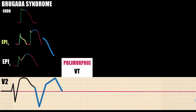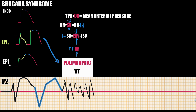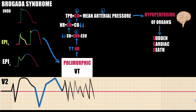Short-coupled premature complexes are capable of initiating circus movement re-entry, represented by polymorphic ventricular tachycardia. Polymorphic ventricular tachycardia is characterized by heart rate acceleration leading to decreased end-diastolic volume due to shortened diastolic time, which consequently causes stroke volume reduction. Stroke volume reduction leads to decreased cardiac output, which in turn decreases mean arterial pressure, ultimately causing hypoperfusion of organs — especially the brain — leading to sudden cardiac death.